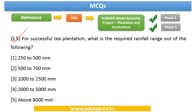Question number five: For successful tea plantation, what is the required rainfall range? The answer is 2000 to 5000 mm. Please memorize this as the required rainfall range.